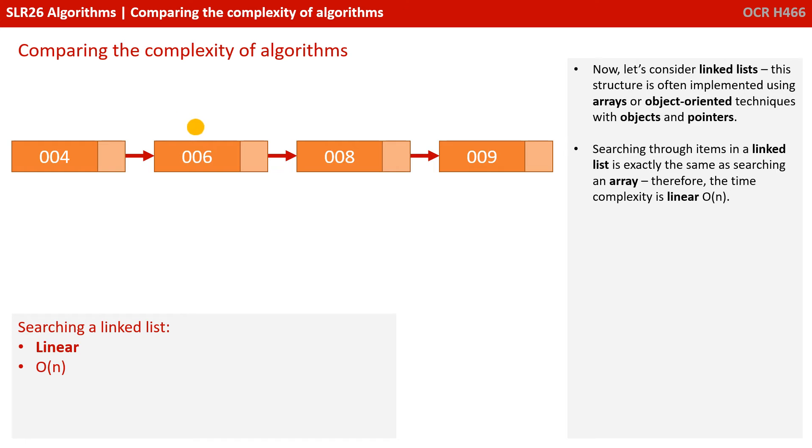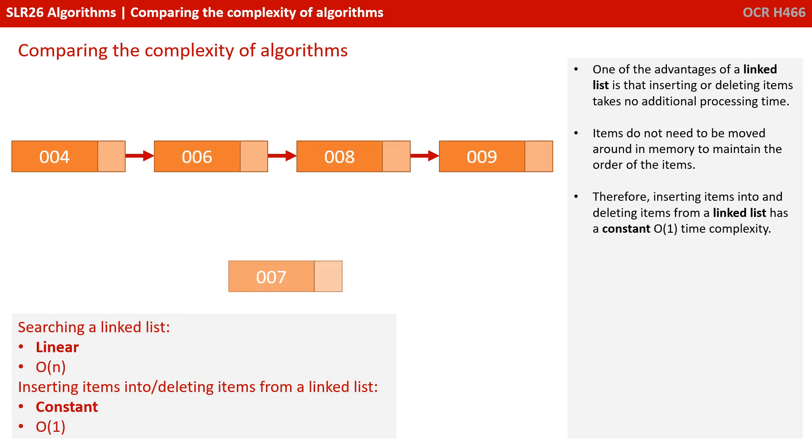Now let's consider linked lists. This structure is often implemented using arrays or object-oriented techniques with objects and pointers. Searching through items in a linked list is exactly the same as searching an array. We start at the beginning and check each item one at a time. Therefore, the time complexity for searching a linked list is once again linear. One of the advantages of a linked list is that inserting or deleting items takes no additional processing time. Items do not need to be moved around in memory to maintain the order of the items. Therefore, inserting items into and deleting items from a linked list has a constant O(1) time complexity.